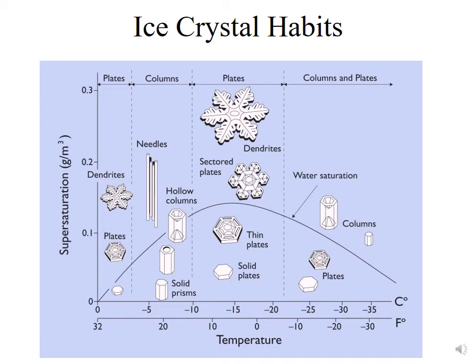Moving between about minus 10 and minus 22 degrees Celsius along the water saturation curve, you're now in the realm of dendrites — essentially hexagonal plates upon hexagonal plates, called sectored plates. Or you can have true dendrites at high supersaturations, which is what people often draw when they think of snowflakes, though here we're talking about individual crystals. As you move even colder, below minus 22, you'll get back into the realm of columns.